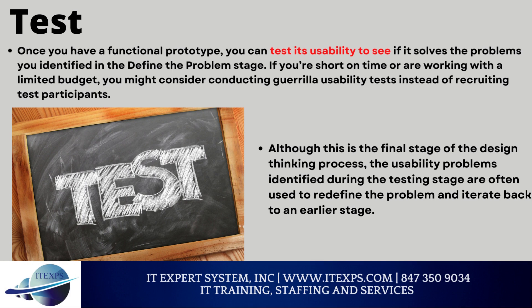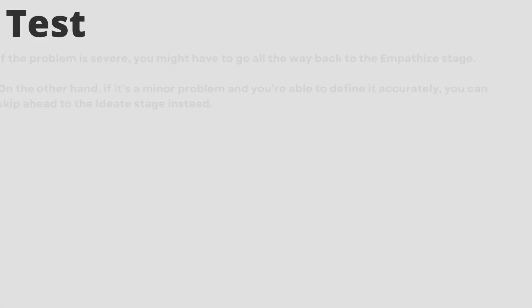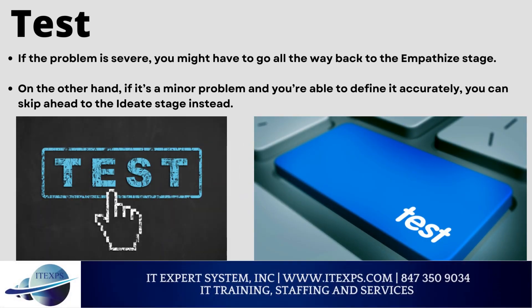Once you have a functional prototype, you can test its usability to see if it solves the problems identified in the define-the-problem stage. If you are short on time or working with a limited budget, you might consider conducting guerrilla usability tests instead of recruiting test participants. Although this is the final stage of the design thinking process, the usability problems identified during the testing stage are often used to redefine the problem and iterate back to an earlier stage. If the problem is severe, you might have to go all the way back to the empathize stage.